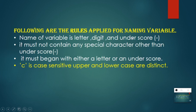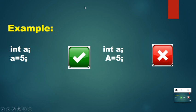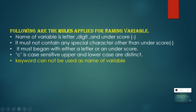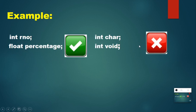Another rule is that C is case sensitive, so it differentiates between uppercase and lowercase — it will not consider both as the same. For example, 'int a = 5' uses a small 'a', but if you assign the value 5 to capital 'A', the compiler will not accept it because it considers small 'a' and capital 'A' as different variables. The other rule is that keywords cannot be used as variable names. You cannot use the 32 keywords in C language. For example, 'char' and 'void' are keywords. 'int roleNumber' will be accepted, but 'int char' will not. 'float percentage' will be accepted, but 'int void' will not, because void and char are keywords.